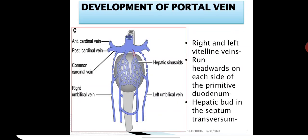The portal vein develops from the right and left vitelline veins. To start with, the right and left vitelline veins run headwards on each side of the primitive duodenum — with the vitelline veins medial and the umbilical veins lateral. They run through the septum transversum to open into the floor of the sinus venosus.